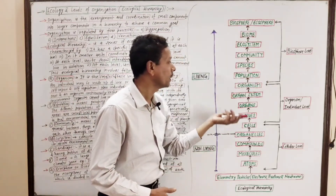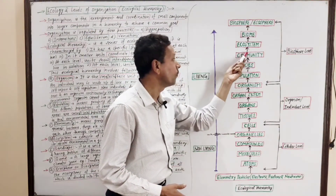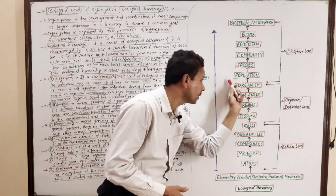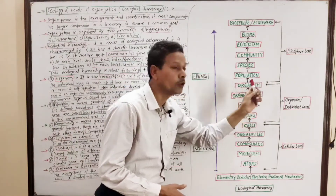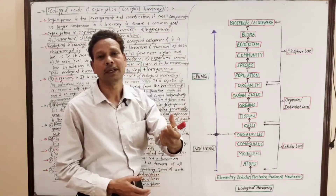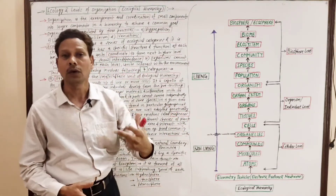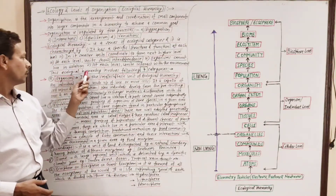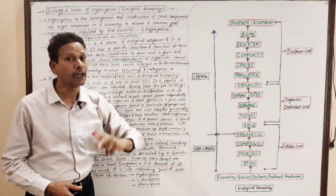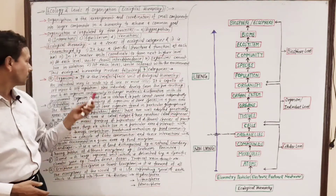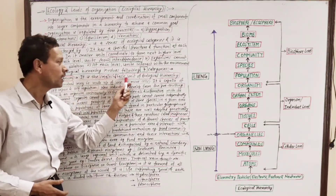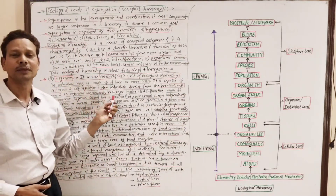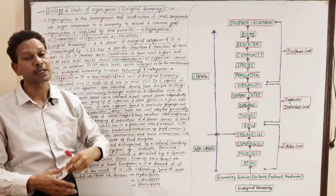In this ecological hierarchy, seven categories are involved: organism, population, species, community, ecosystem, biome, and biosphere. The organism is the smallest and basic unit of the ecological hierarchy — an organism having the power of self-repair and self-regulation. An organism continuously exchanges its material and information with its surroundings.